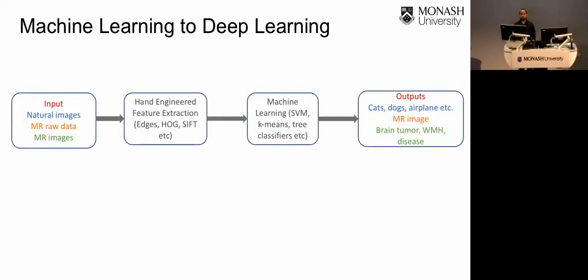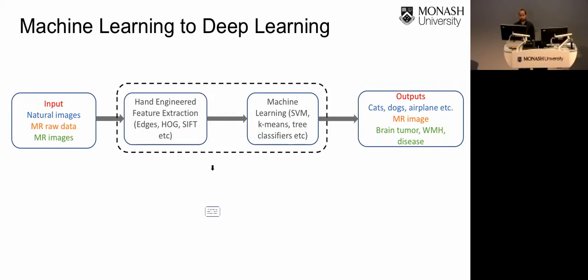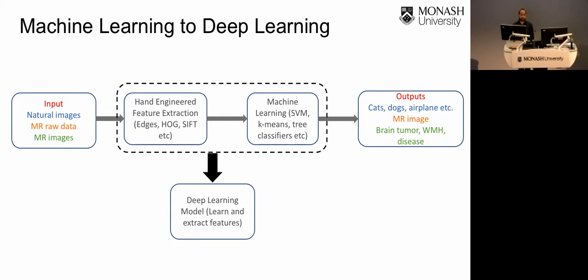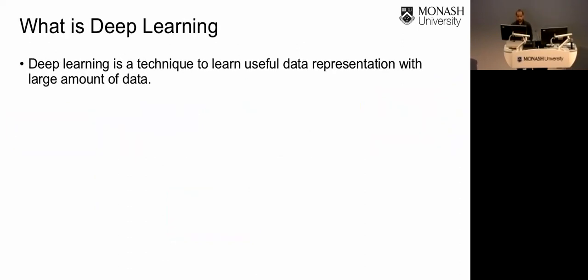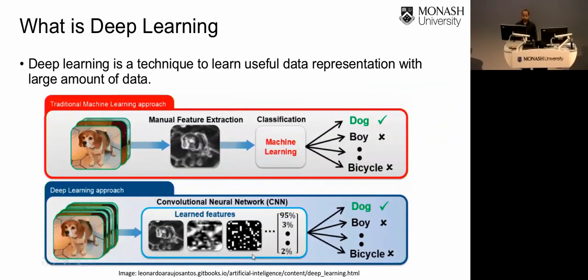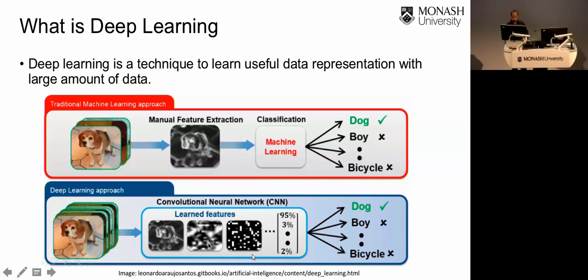How is deep learning different from machine learning? If you combine the feature extraction module and the classification module into a single learning algorithm, this is called deep learning. Deep learning is able to learn and extract features, then make classifications and predictions based on those features. With the traditional approach, an expert extracts features and then feeds them to a machine learning algorithm. With deep learning, a convolutional neural network takes a set of input and output images and is trained to both extract features and classify them — all as a single entity.